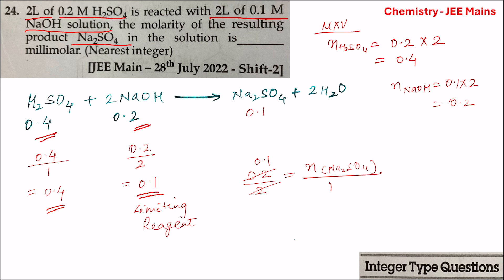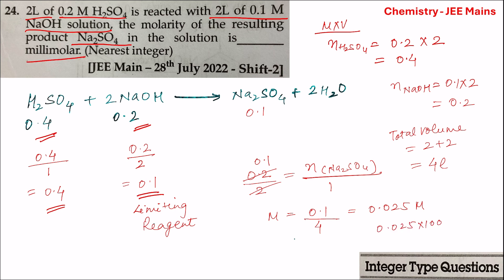The total volume of the solution on mixing 2 liters of H₂SO₄ and 2 liters of NaOH equals 2 plus 2, which is 4 liters. The molarity of the resulting Na₂SO₄ solution will be equal to moles of Na₂SO₄, that is 0.1, divided by 4, which equals 0.025M. To convert to millimolar, multiply by 1000, giving 25 millimolar. So the answer is 25.